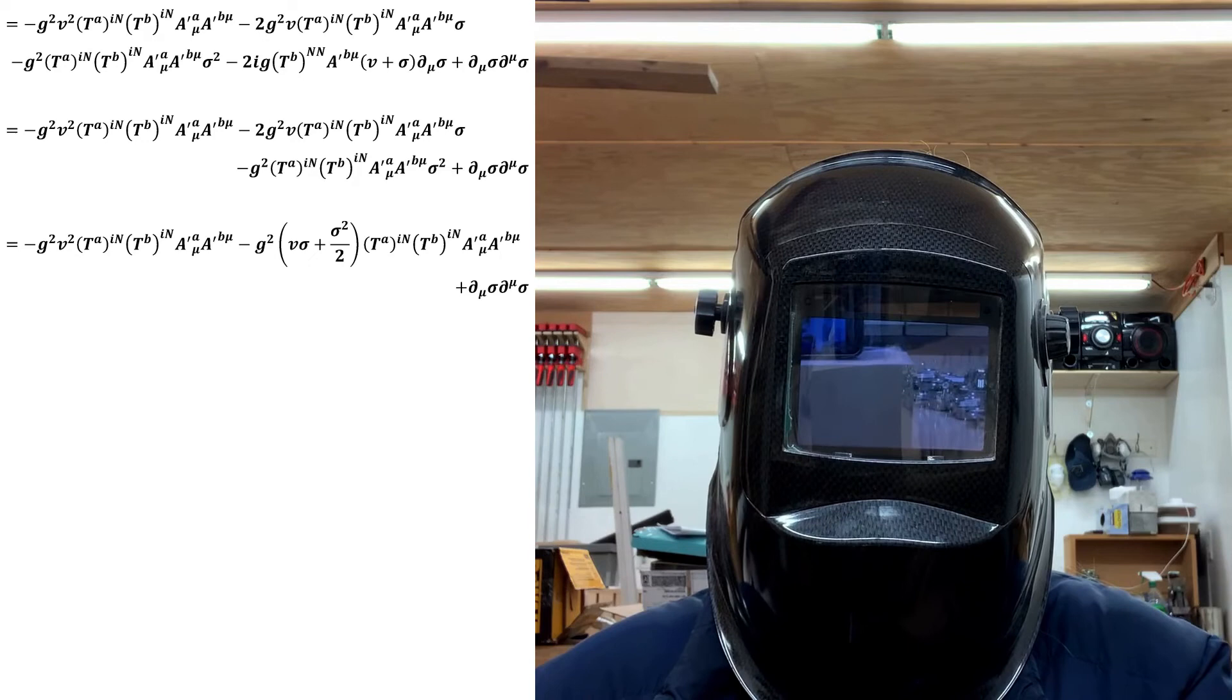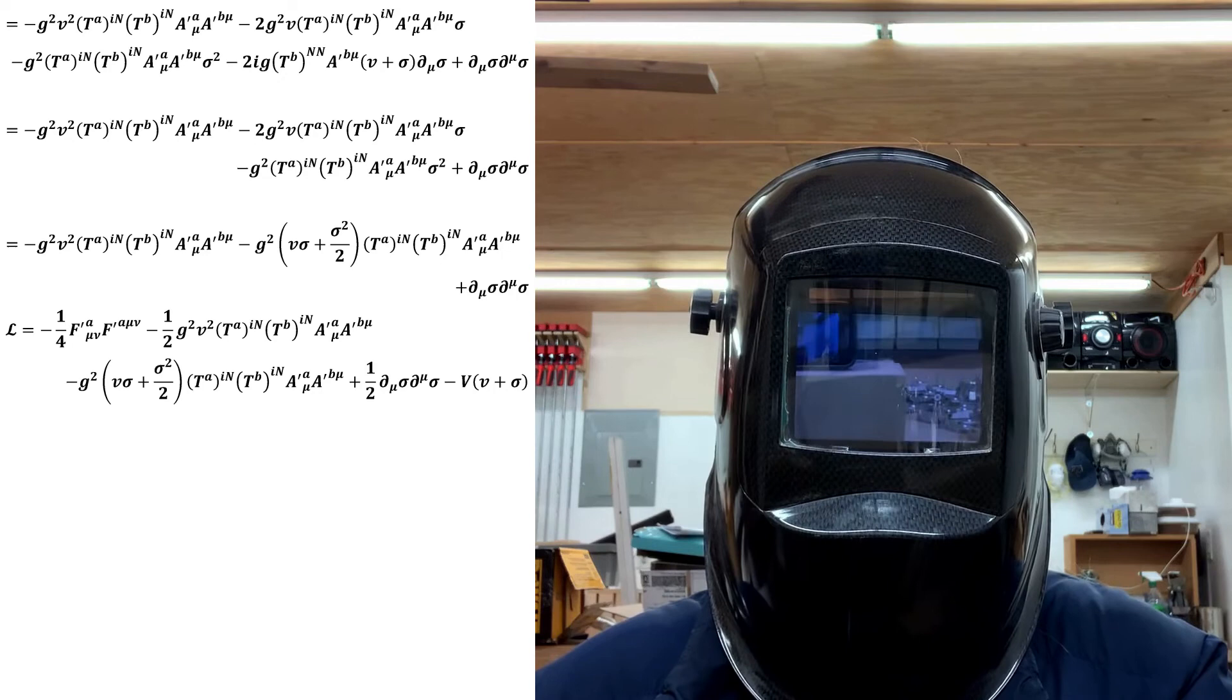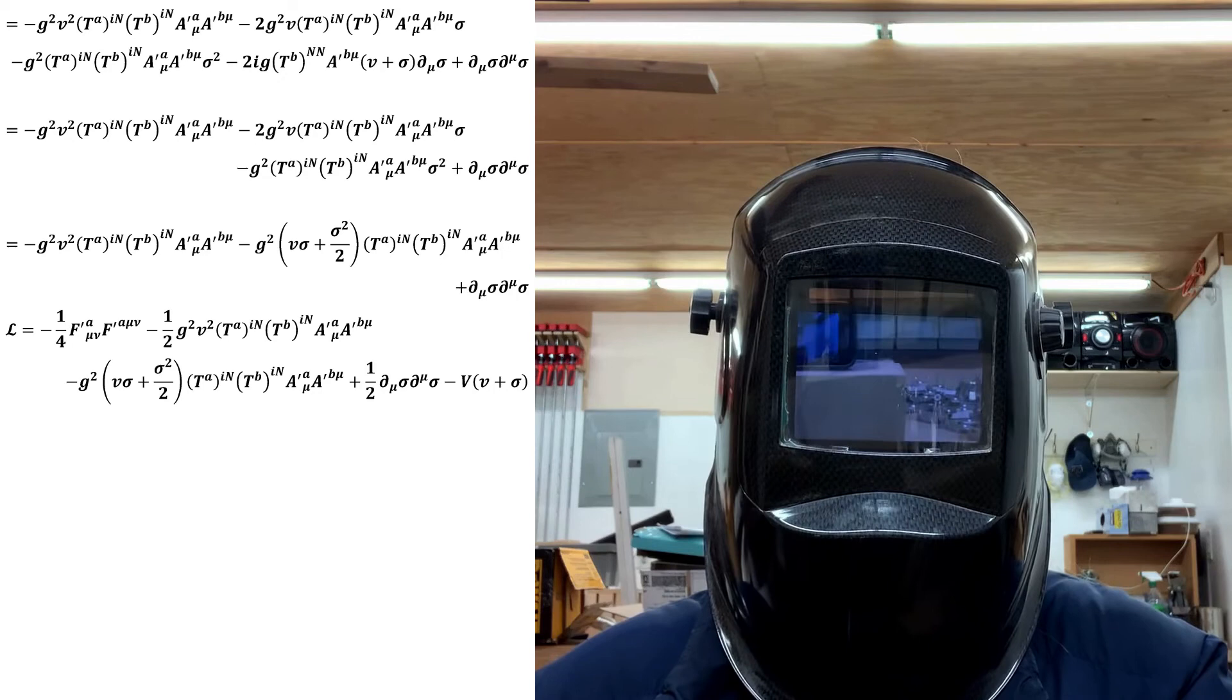The reason why I waited to bring this up until now is that leaving the math general helps make the isospin index sum manipulations more clear. Inserting this back into the Lagrangian gives us the final expression for the spontaneously broken Lagrangian density.